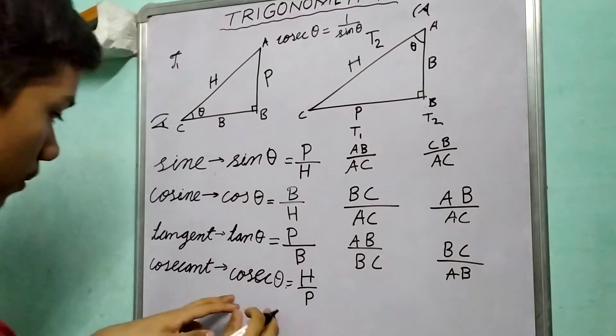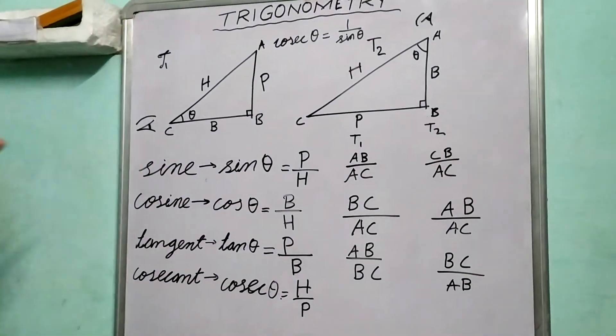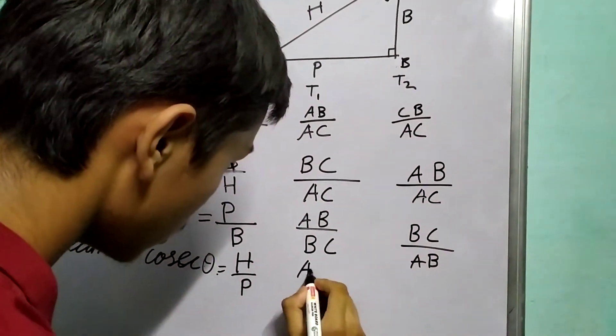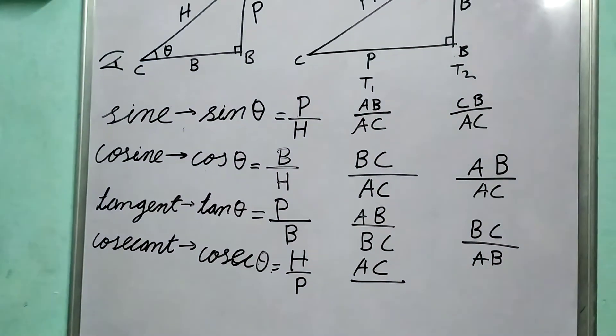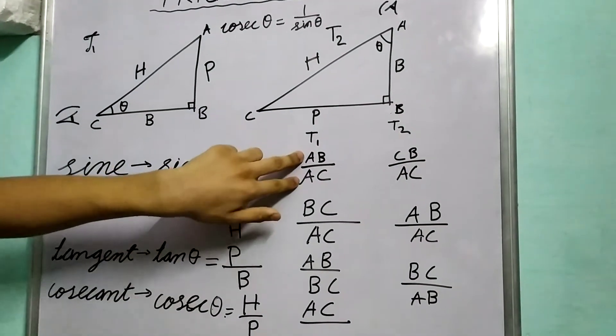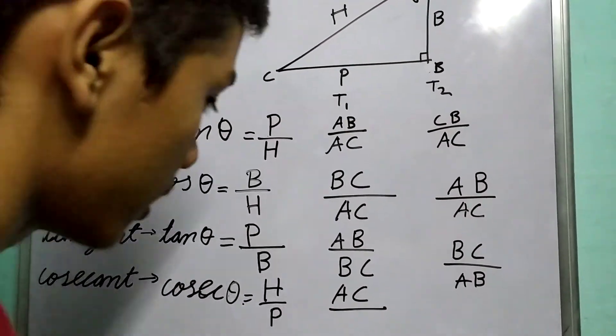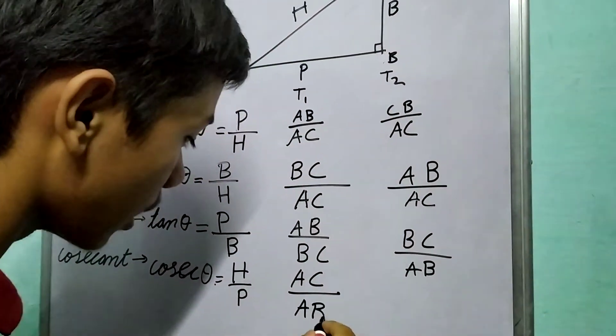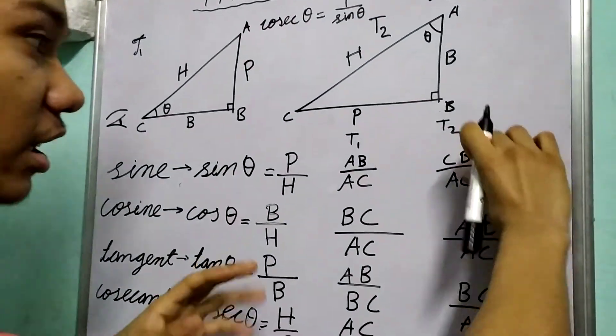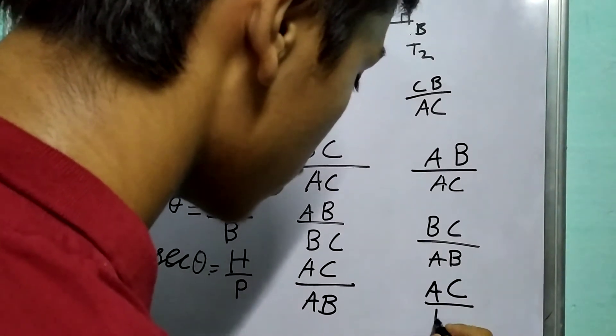Let us find out what is cosec theta in this case. In this case it's H upon P, so AC upon AB. So technically, we are writing this and the opposite, interchanging the numerator and denominator in this case. And in this case, it's 1 upon sin theta, so we can literally interchange the numerators and get the correct value, AC upon BC.